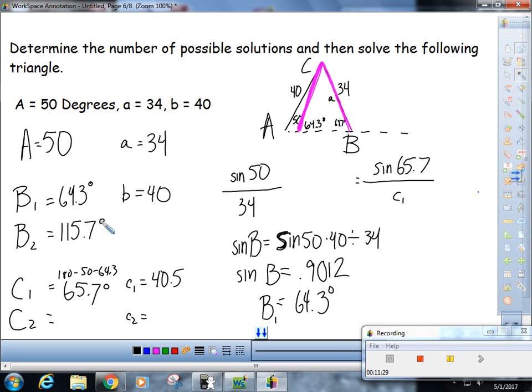So then to find C₂ you would do 180 minus 50 minus 115.7, and that gives you 14.3 degrees. And then you would come over here and do one more law of sines. So sine of 50 is to 34, like sine of 14.3 is to little c₂. Cross multiply and divide: 34 times the sine of 14.3 divided by the sine of 50, and you get 10.96, or about 11.0 for c₂.